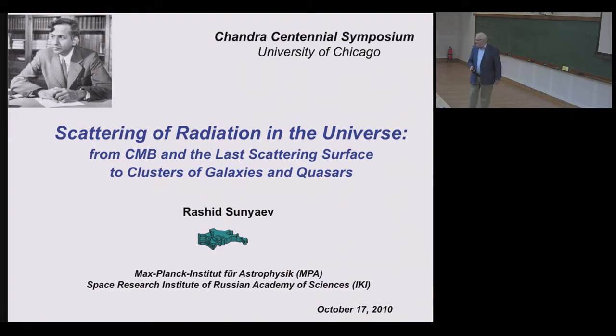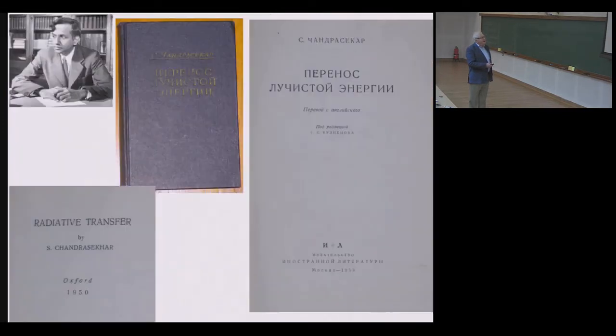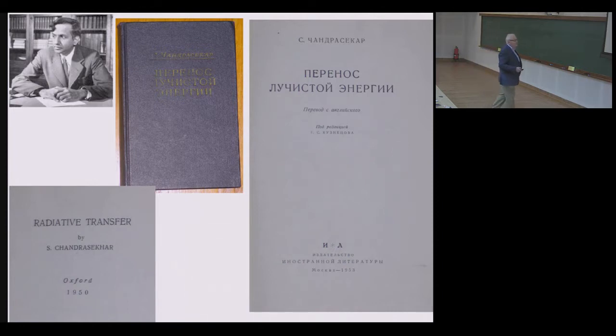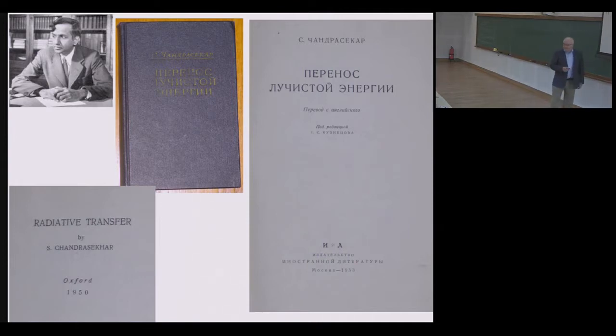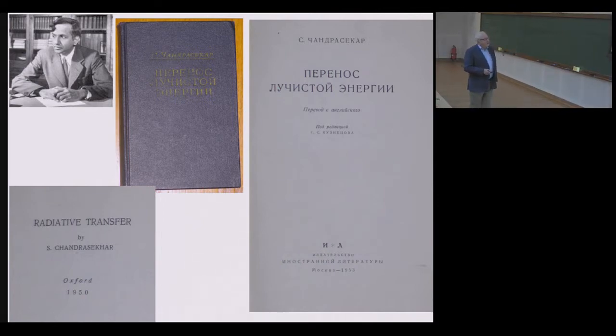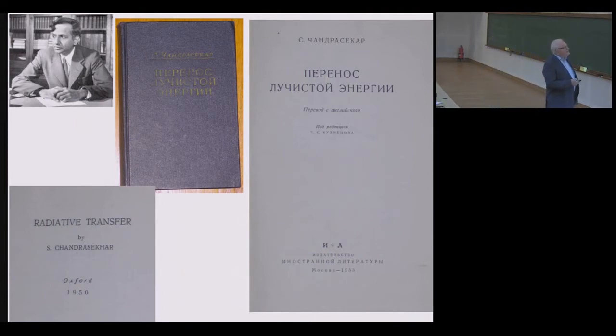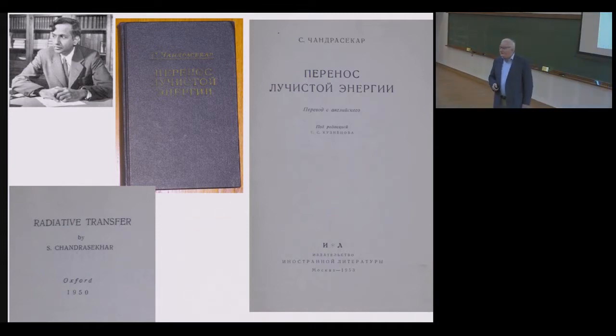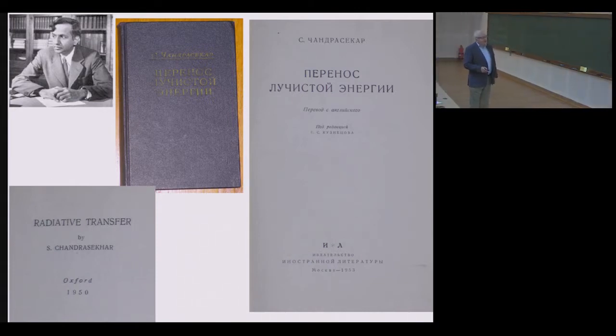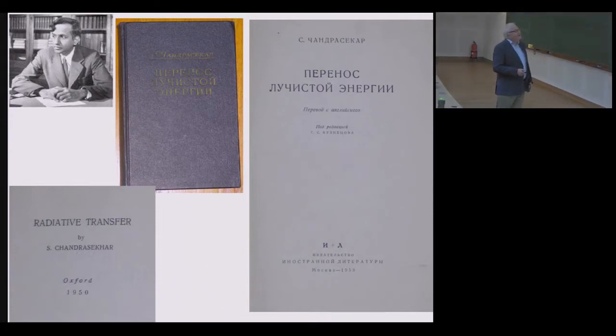Nine years have passed, and I will show you very simple slides from that talk which were always important for me. This is the book of Chandrasekhar Radiative Transfer, which was published in Oxford in 1950. Chandrasekhar was approximately 40 years old. This is a beautiful book, and in three years it was translated and published in Moscow.